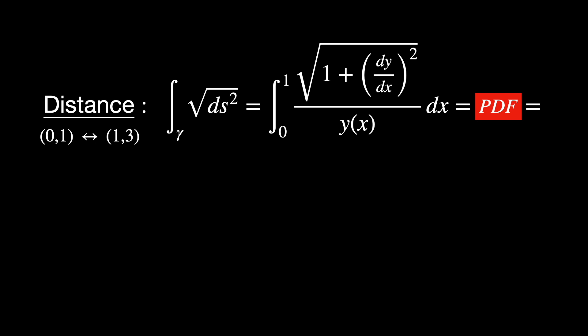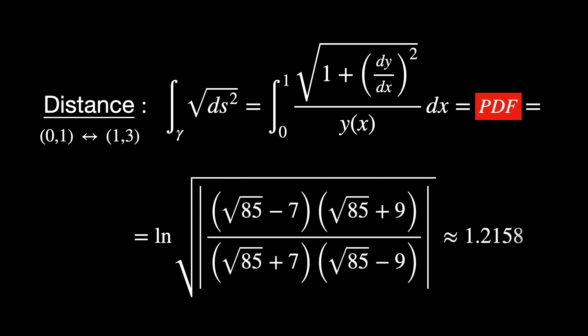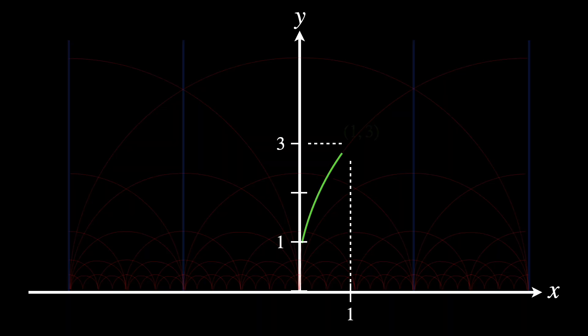Finally, we're ready to calculate the distance between the initial point (0,1) and the final point (1,3). We solved it analytically in the PDF link below. It was not easy, I gotta say, but the math we used was simply beautiful. Therefore, the shortest path between points (0,1) and (1,3) in this space is 1.2158, which is less than the Euclidean distance using the Pythagorean theorem. Actually, it is 45.64% less.